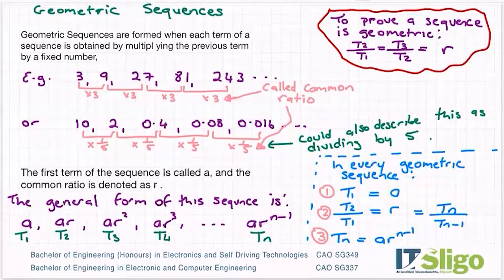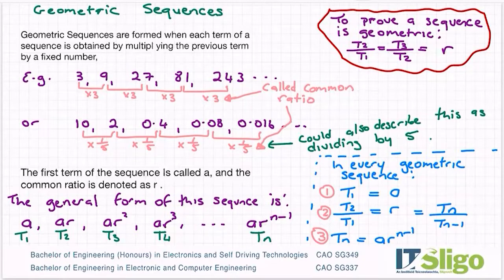I would describe it as a sequence that can be formed by multiplying or dividing the previous term by a fixed number, but I'll explain why mine is slightly different in a second. So the first example I have there is the sequence 3, 9, 27, 81, 243.